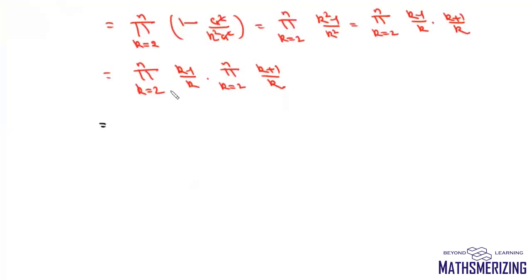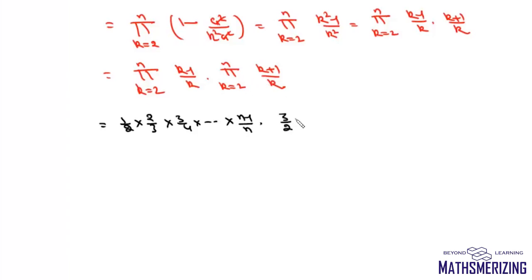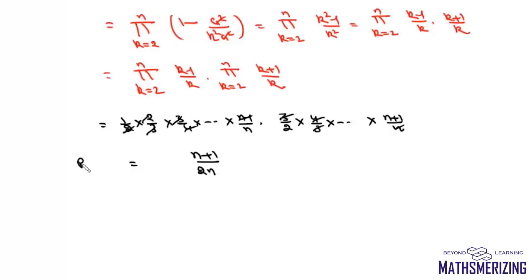Looking at the first product when k goes from 2 to n, we get 1/2 · 2/3 · 3/4 · ... · (n-1)/n. For the second product, we get 3/2 · 4/3 · ... · (n+1)/n. All intermediate terms cancel in both products, giving us (n+1)/(2n).